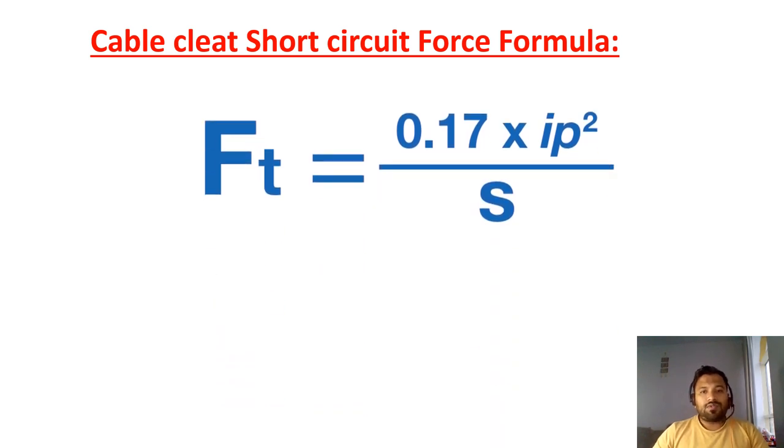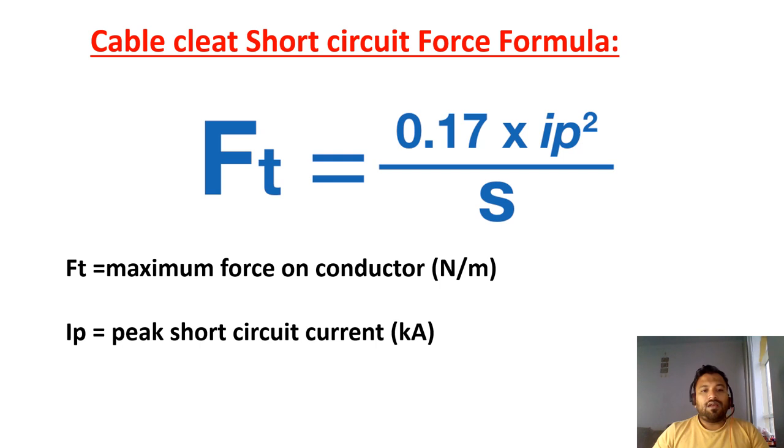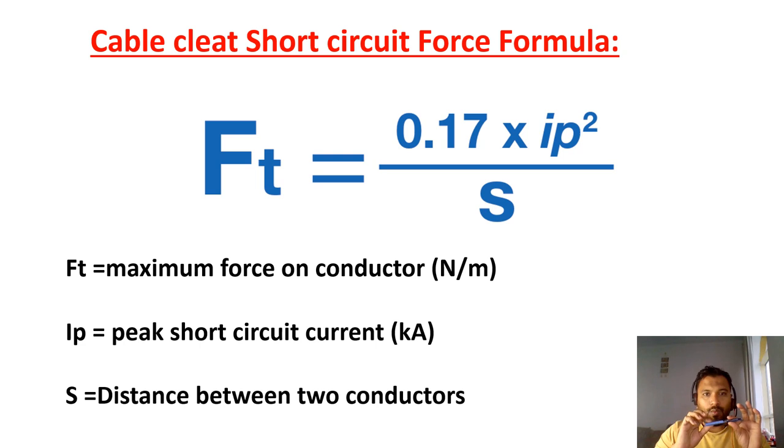Ft is equal to 0.17 into Ip square by S. Where Ft is equal to maximum force on conductor. It is represented in Newton meter. And then this 0.17 is a factor. Ip is equal to peak short circuit current. That is in kilo amperes. S is equal to distance between two conductors in meters. So this is the formula. With this formula, we can know each conductor, what is the force applying on each conductor. So if we know this one, we can select the cable cleats easily.